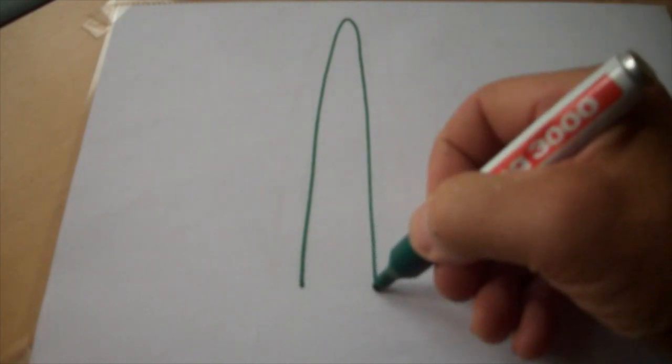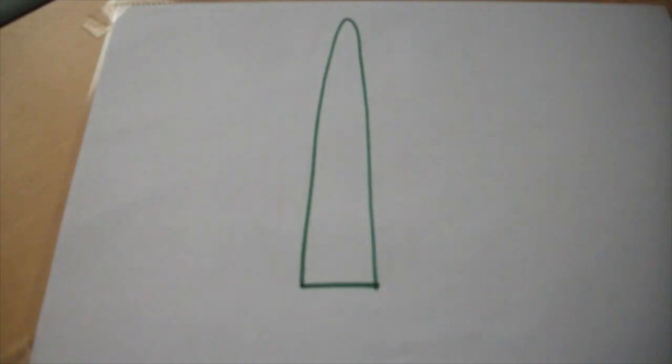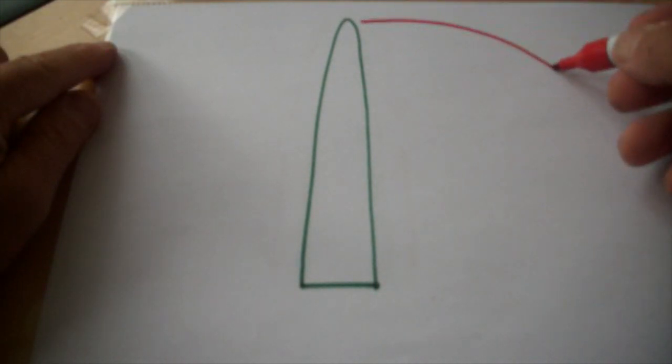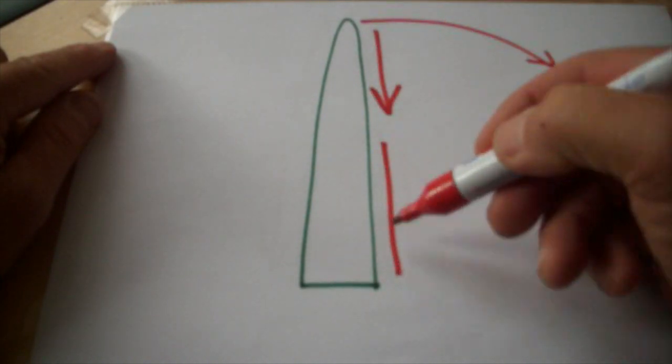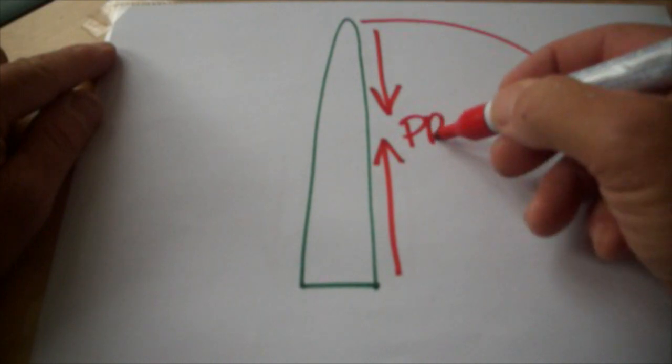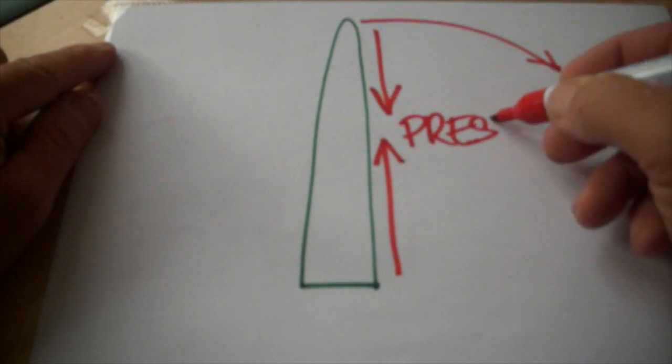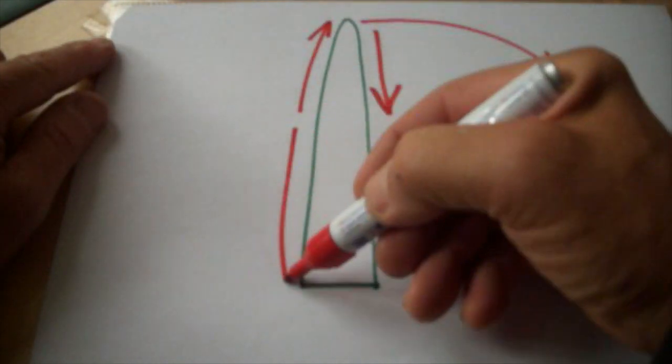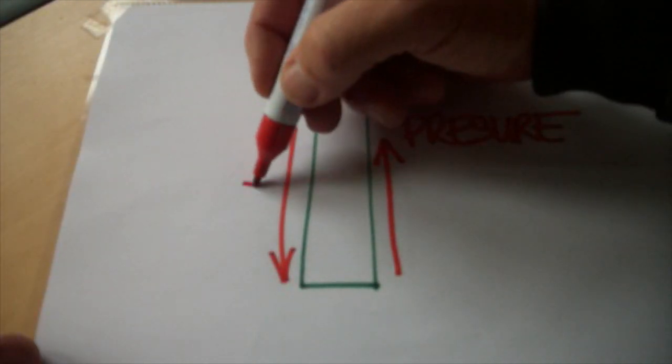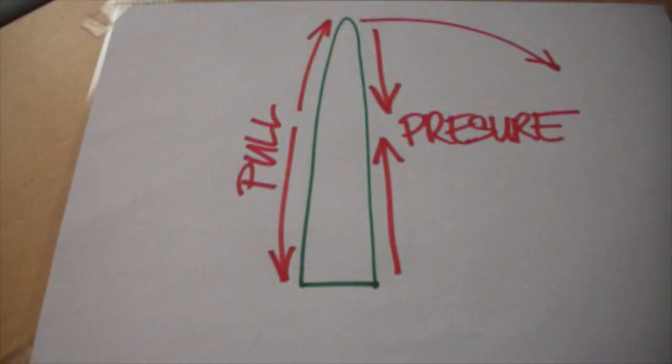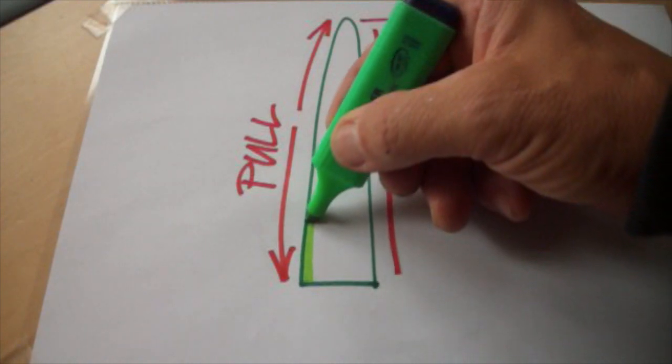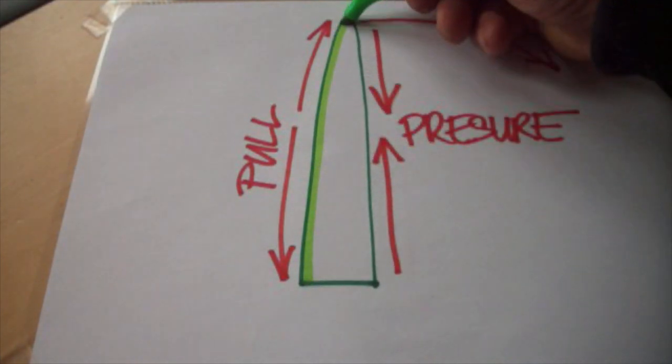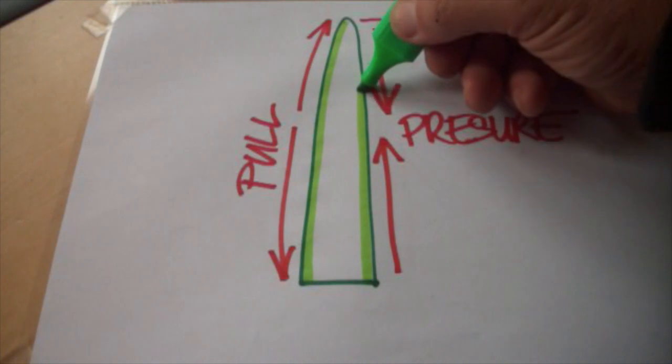I draw this out one more time because this is really important to understand what happens inside the fin when there is force applied to the tip. The fin will bend and on the inside there is going to be pressure. On the outside there is going to be pull. The biggest force on your fin will be on the very outside. That is why you want to have your fibers on the outside.